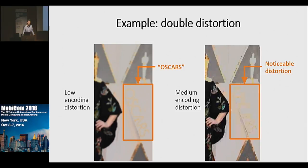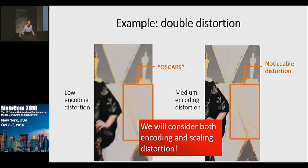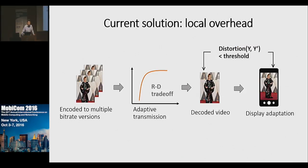In our work, we will consider both the encoding and the display distortion from an end-to-end point of view. Besides this, another problem in the current system is local computation overhead: computing the distortion locally on the device involves pixel-by-pixel analysis of PSNR or SSIM, which introduces energy overhead that compromises the energy saving.